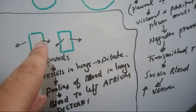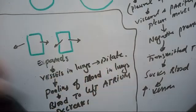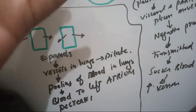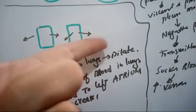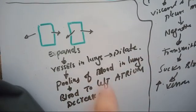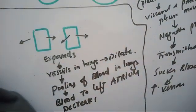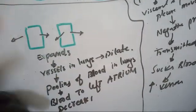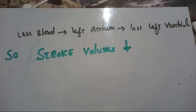The second concept is that during inspiration the lung expands. When the lung expands, the vessels in the lungs also dilate, because the lung is a soft tissue and the vessels inside are also compressible. When the lung contracts, the vessels inside also contract; when the lung dilates, the vessels inside also dilate. When they dilate, there is pooling of blood in the lungs, so the blood flow to the left atrium is decreased.